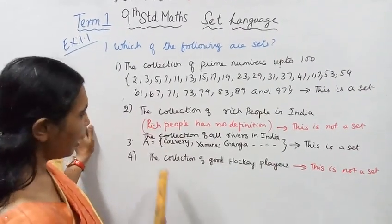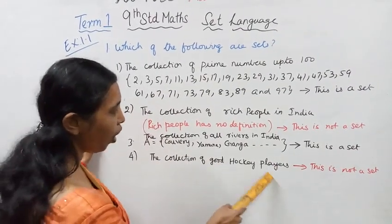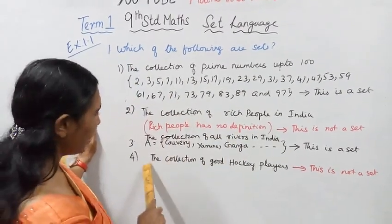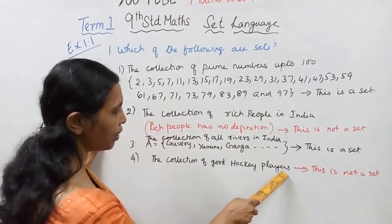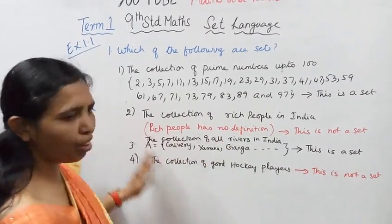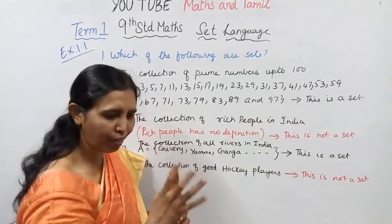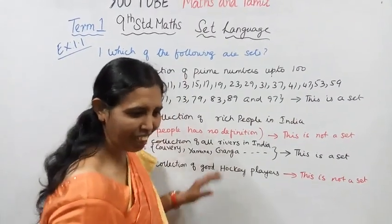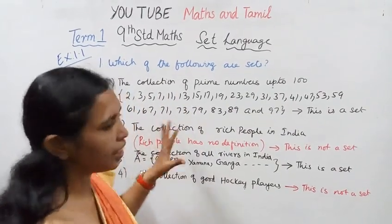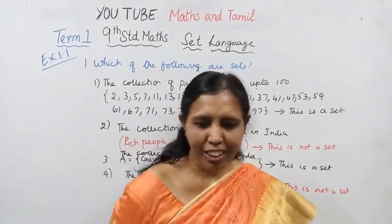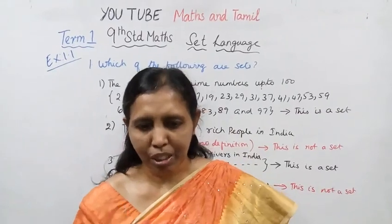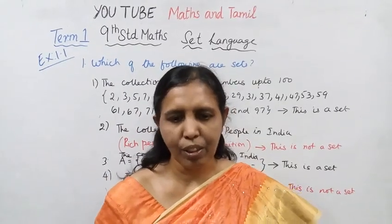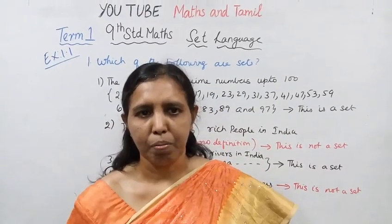The collection of good hockey players - is this a set? The collection of good hockey players has no definition. What makes a good hockey player? This is not well-defined objectively. Therefore, this is not a set.